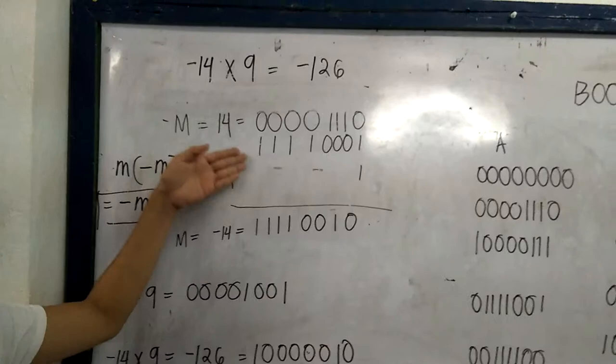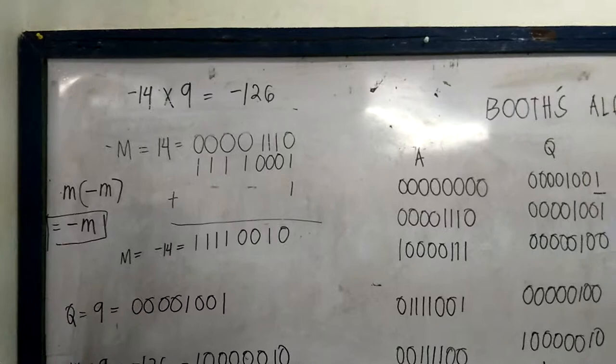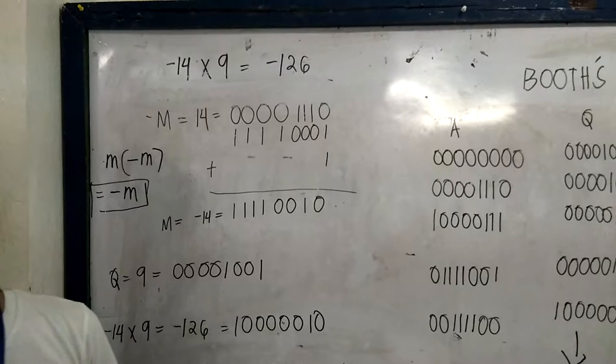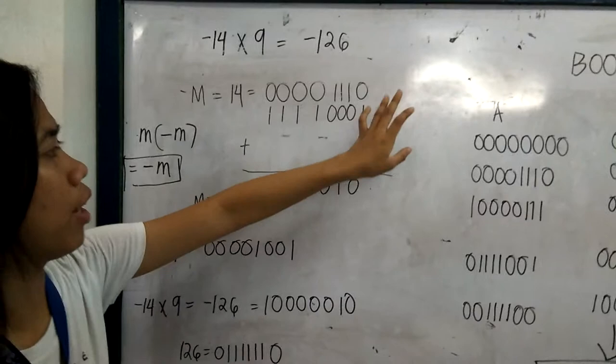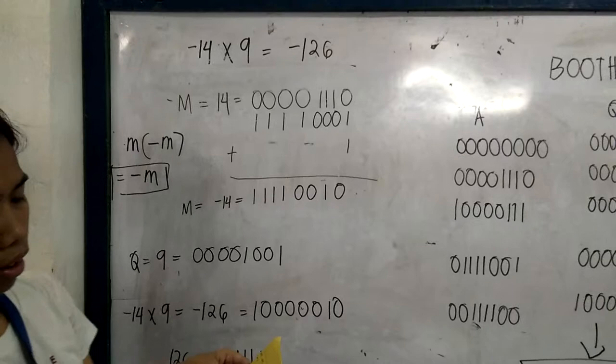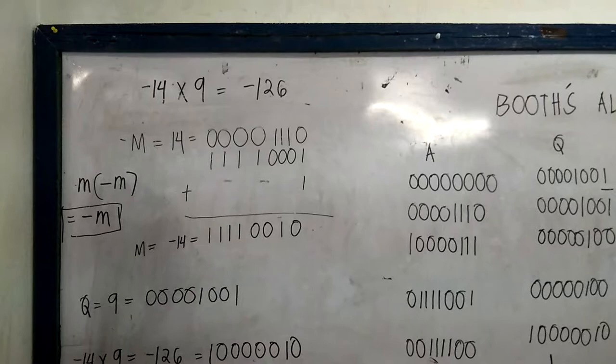14 is equal to 0000 1110. Since we already have positive 14, we then negate it to negative 14. When we negate it, all 0's will become 1, and 1 will become 0.